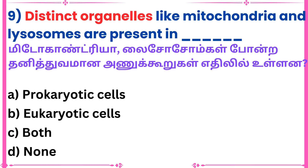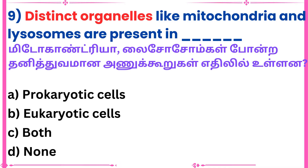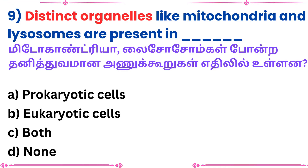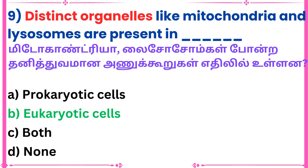Ninth question: Distinct organelles like mitochondria and lysosomes are present in dash. Answer: Eukaryotic cells.